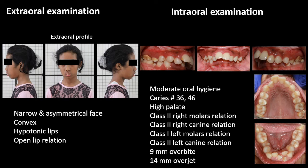Extraoral examination showed that the patient had a narrow and asymmetrical face type, convex profile, hypotonic lips, and open lip relations. Intraoral examination showed that the patient had moderate oral hygiene, caries in teeth number 36 and 46, and hyperlid.